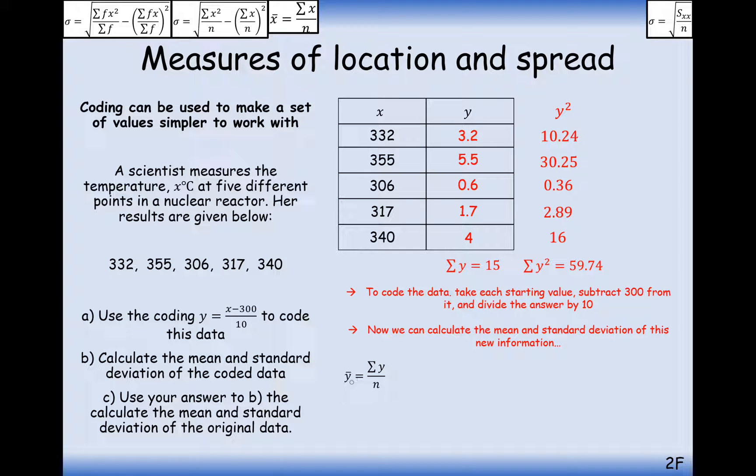So the mean of the y values is the sum of all these y values divided by how many there are. So that's going to be 15 divided by 5, which is 3. So the value, the average of all of these data points here is 3.